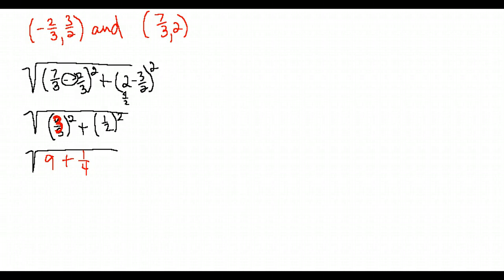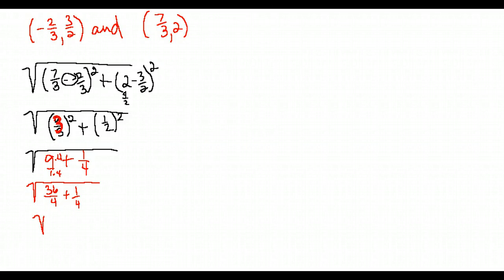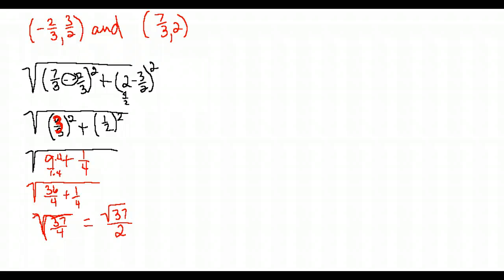We want to add nine and one fourth together. Nine over one, multiplied by four over four, gives 36 fourths, plus one fourth equals 37 over four. Taking the square root: the square root of four is two, but 37 has no whole-number square root. So we leave the answer as the square root of 37 over two. Don't be afraid of fractions!